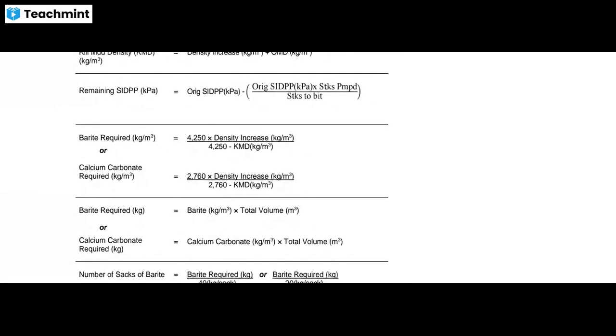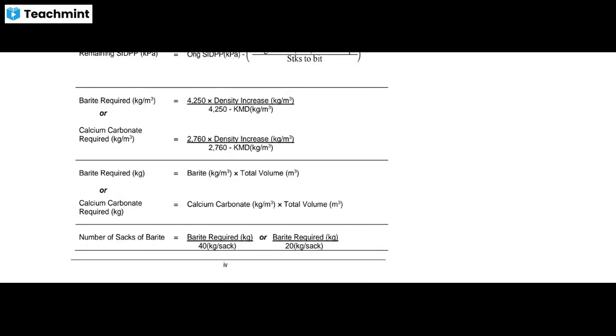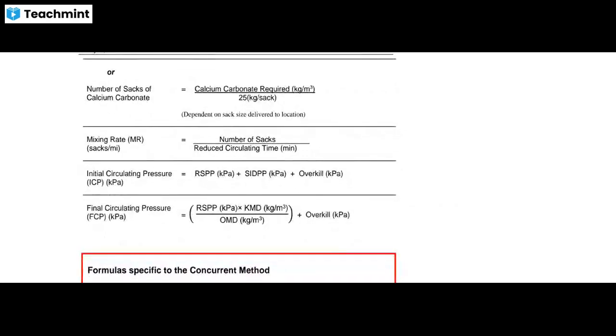For barite requirements, barite required equals barite needed per unit volume multiplied by total volume. Number of sacks required for barite equals barite required divided by 40 kilograms per sack. Number of sacks of calcium carbonate equals calcium carbonate required divided by 25 kg per sack — this depends on the sack size delivered to location. Mixing rate equals number of sacks divided by reduced circulating time.